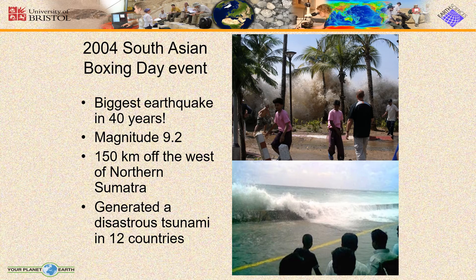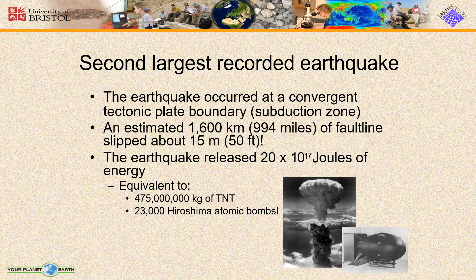The magnitude of this biggest earthquake was 9.2, occurring 150 km off the west of northern Sumatra. It generated a disastrous tsunami in 12 countries. The second largest earthquake recorded occurred at a convergent tectonic plate boundary, that is a subduction zone, and an estimated 1,600 km — that is 994 miles — of fault lines slipped about 15 meters, that is 50 feet.